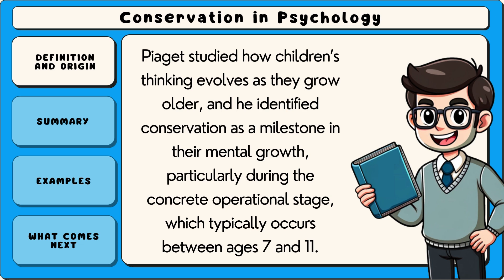Piaget studied how children's thinking evolves as they grow older, and he identified conservation as a milestone in their mental growth, particularly during the concrete operational stage, which typically occurs between ages 7 and 11.